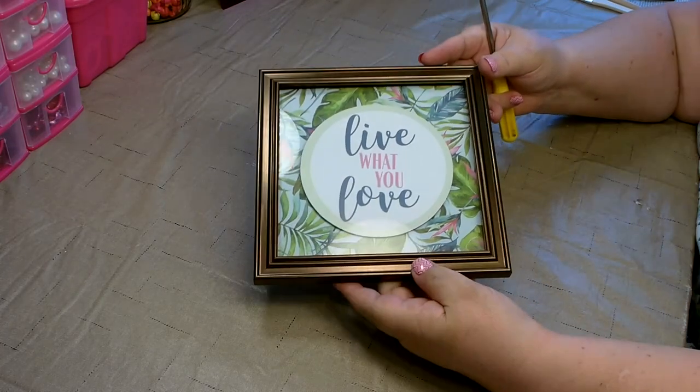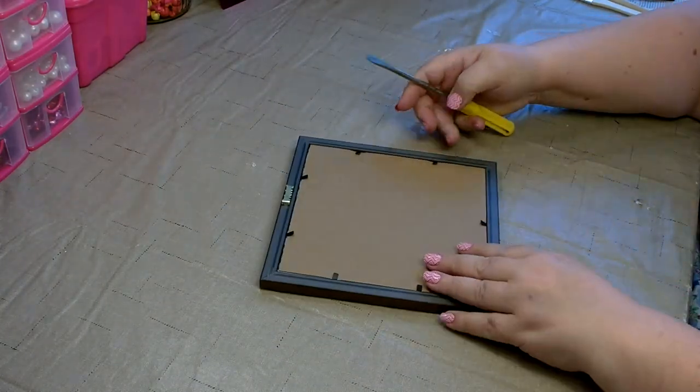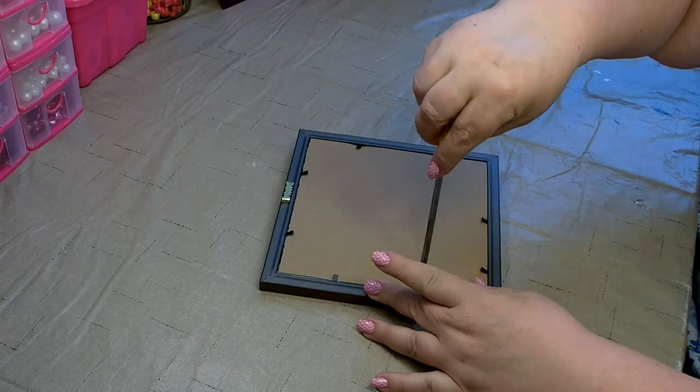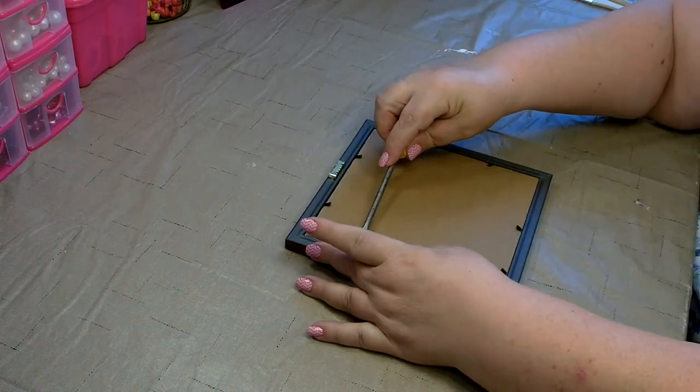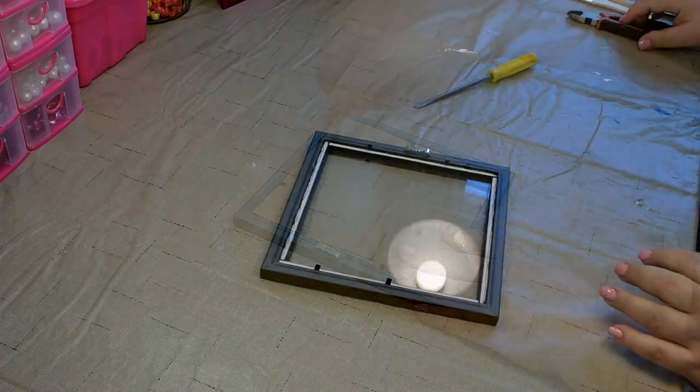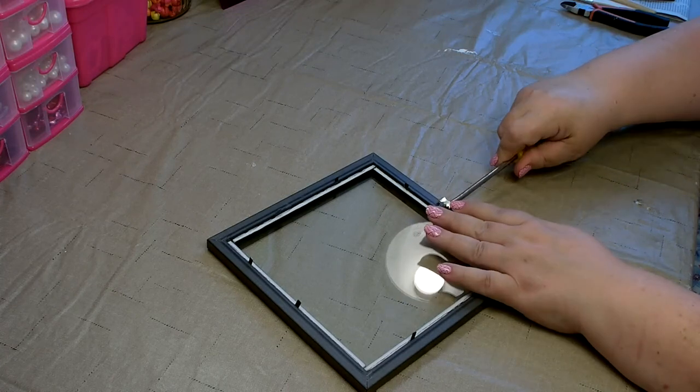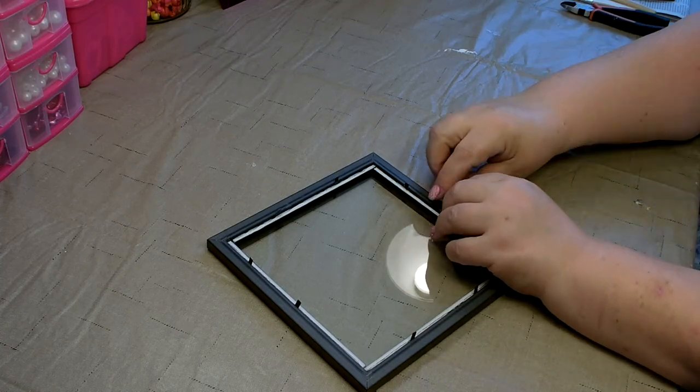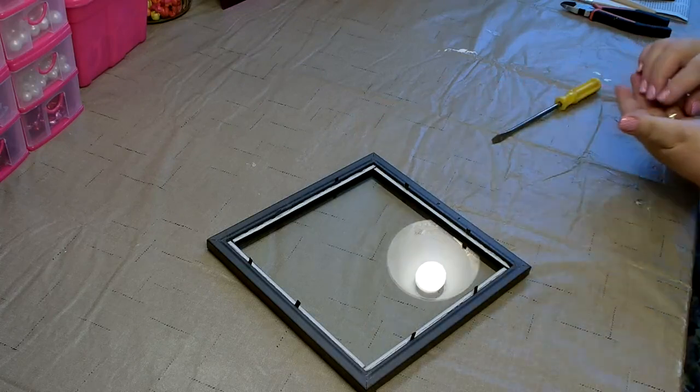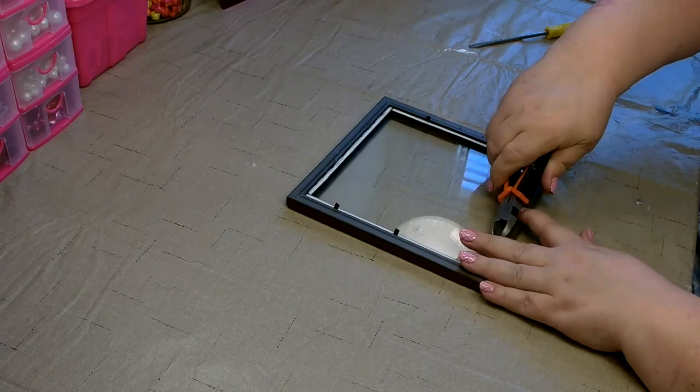To start you're going to need an 8x8 framed piece of artwork. You'll want to use a flat head screwdriver to remove the backing and the hanger from the frame. I just used my wire cutters to pull out the metal prongs.